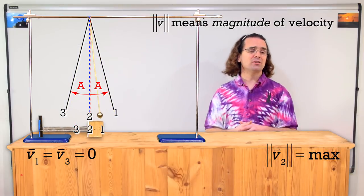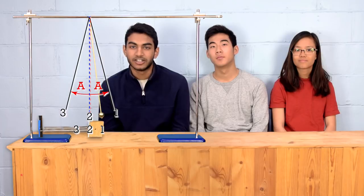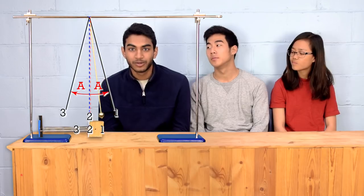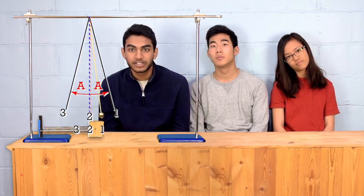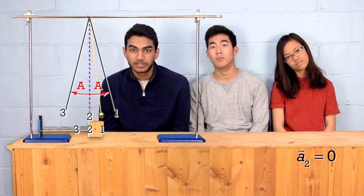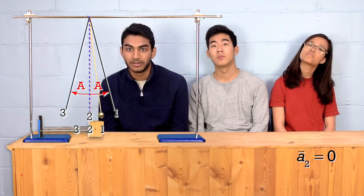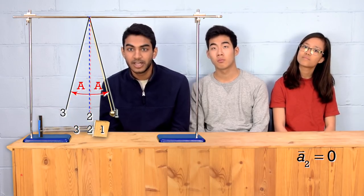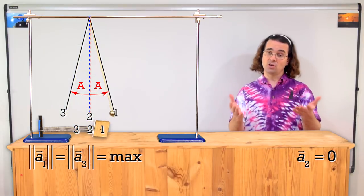Anish, what about the magnitudes of the accelerations at those positions? Sure. At rest position, or position 2, the displacement from equilibrium position is 0, so the restoring force is 0, so the acceleration of the object is also 0. At positions 1 and 3, the displacement from equilibrium position has its maximum magnitude, which is the amplitude, so the restoring force has its maximum magnitude, so the acceleration of the object also has its maximum magnitude. That is all correct.